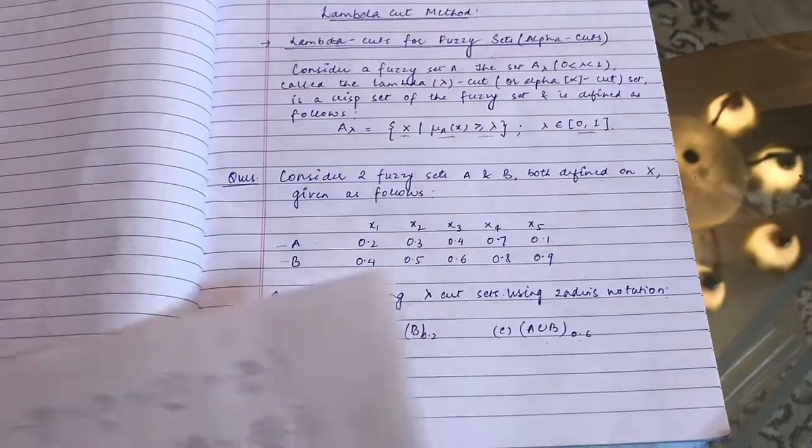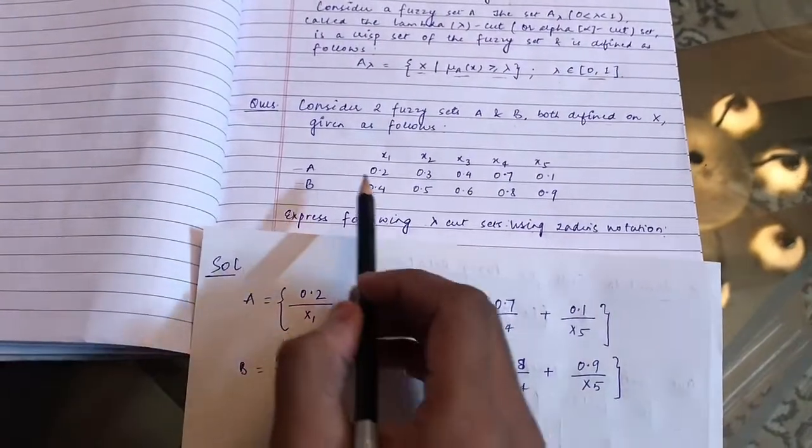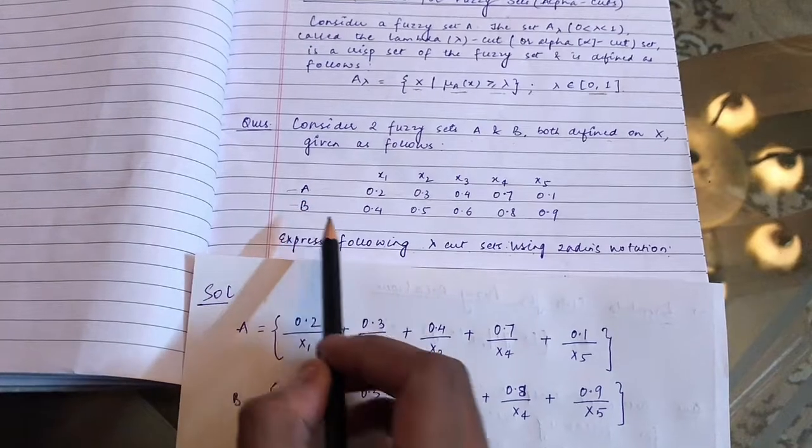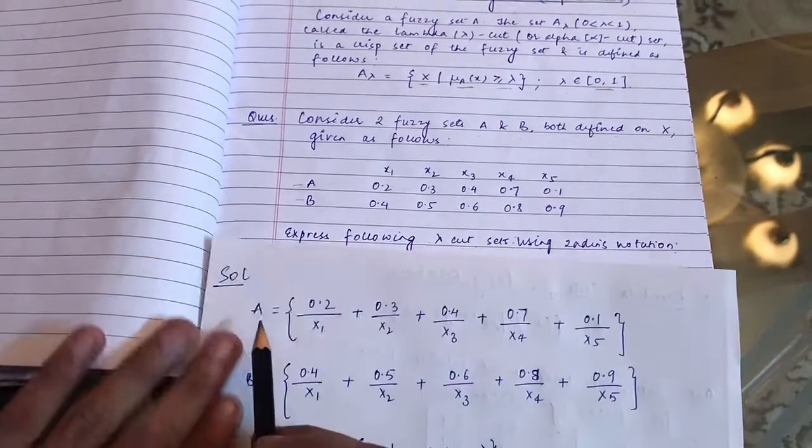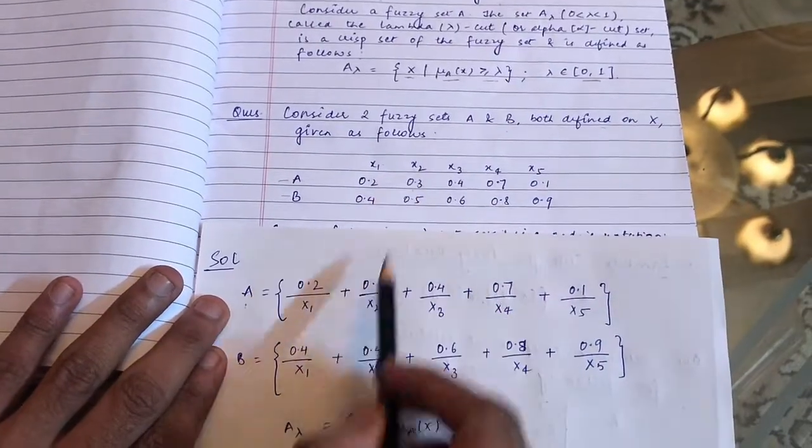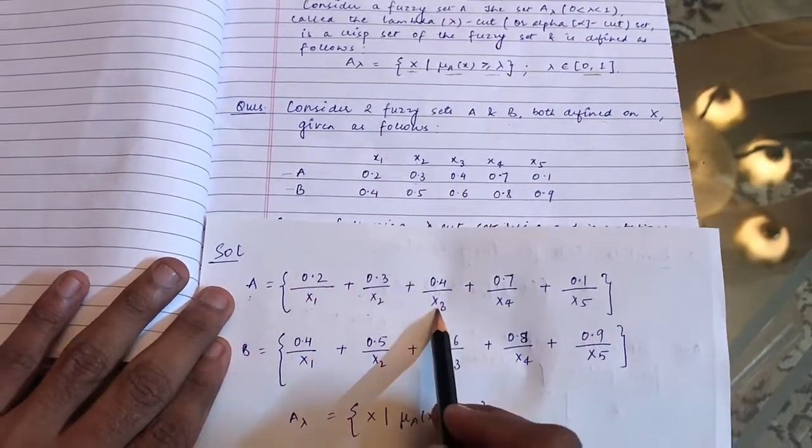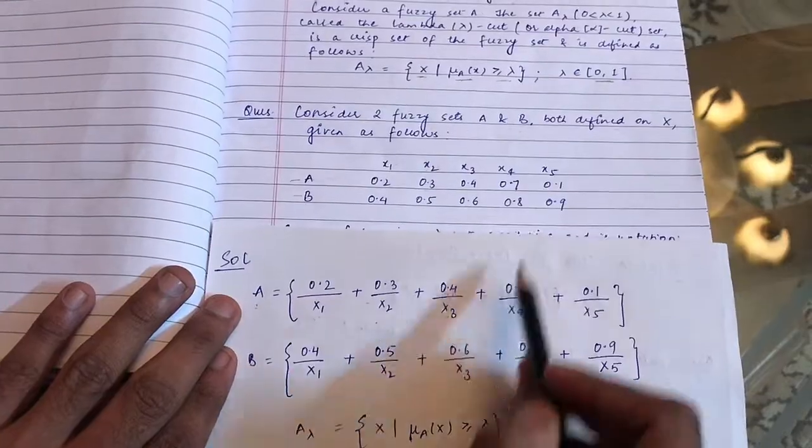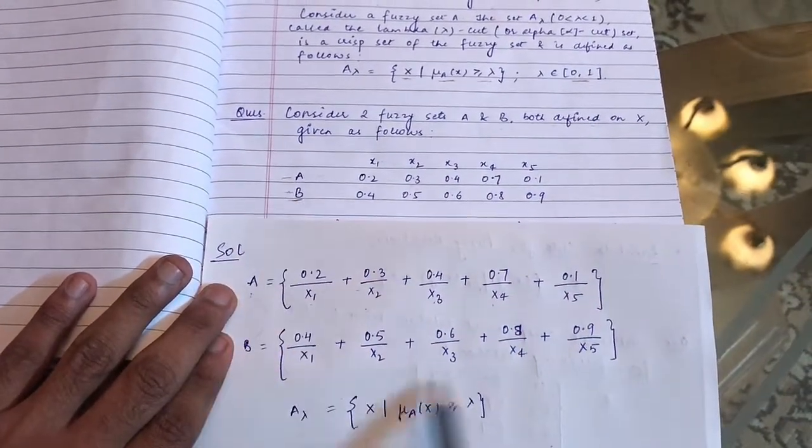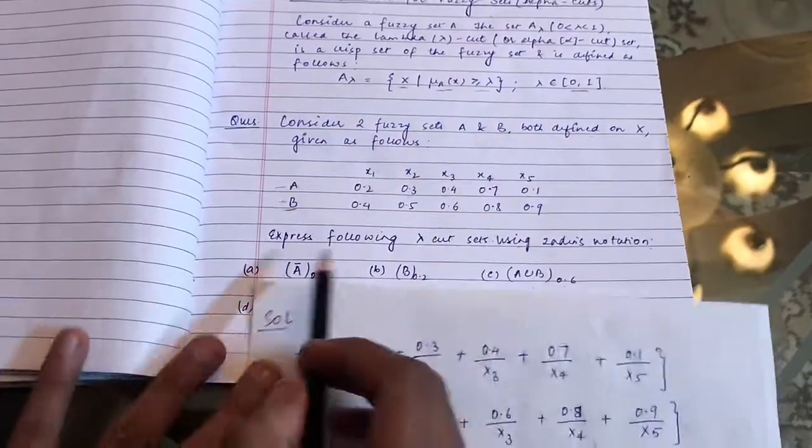Our first task will be to arrange the given information in the form of sets like this. So A is equal to 0.2/x1 + 0.3/x2 + 0.4/x3 + 0.7/x4 + 0.1/x5. Similarly we can arrange for B.